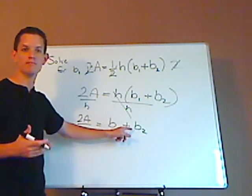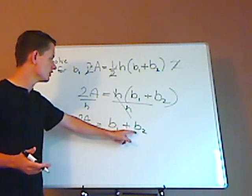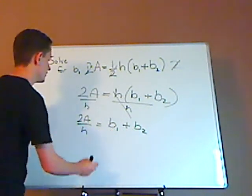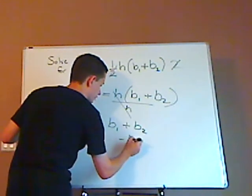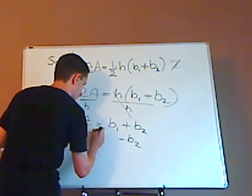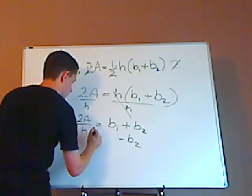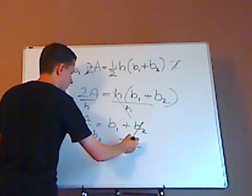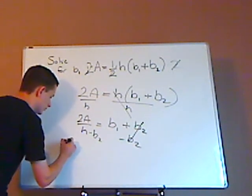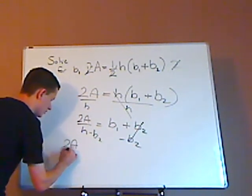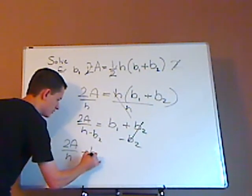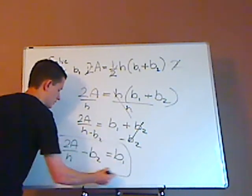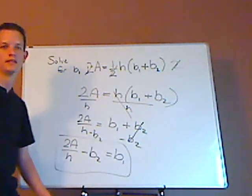That's plus B2 so to get rid of B2 you simply subtract it. So you're going to subtract both sides by B2. When you do that the B2's cancel out here and that leaves you with 2A over H minus B2 and that's going to equal B1 and that's it.